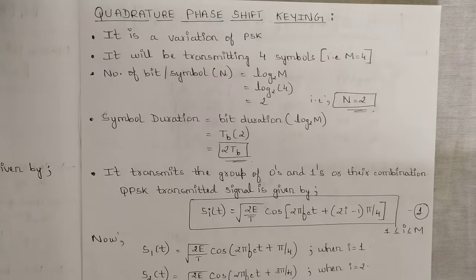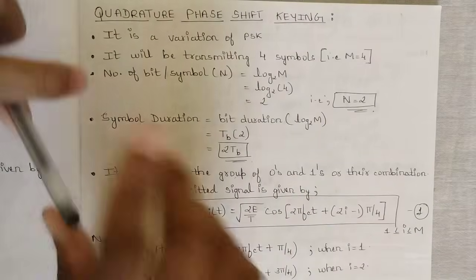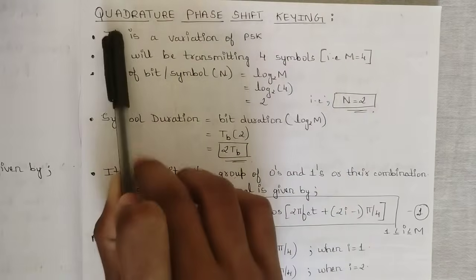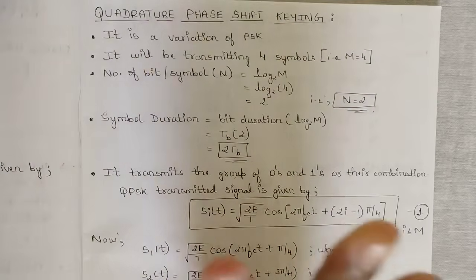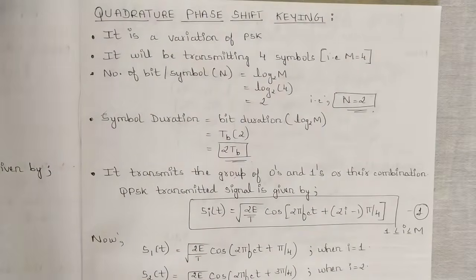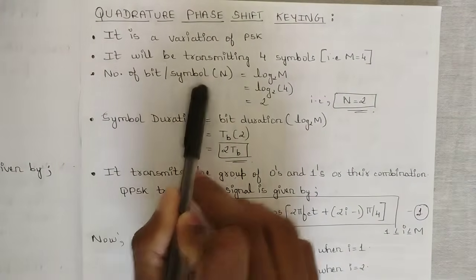We are going to be discussing one more phase shift keying technique called Quadrature Phase Shift Keying (QPSK). Comparing it with BPSK, the number of transmitting symbols we are going to use is four symbols, because as the word suggests it is quadrature. We need four signals altogether, varying with respect to different values of phi. The value of M is four.